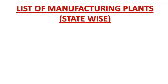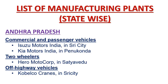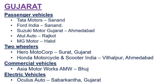Now let us see the list of automobile manufacturing plants in India. In Andhra Pradesh, the commercial and passenger vehicle sections include Isuzu Motors India in Sri City and Kia Motors India in Penukonda. In the two-wheeler section, Hero MotoCorp is in Satyavedu, and in off-highway vehicles, Kobelco Cranes is in Sri City. In Gujarat, the passenger vehicle section has Tata Motors and Ford India in Sanand, Suzuki Motor Gujarat in Ahmedabad, and Atul Auto in Rajkot, and MG Motors in Halol. The two-wheeler section has Hero MotoCorp at Surat, and Honda Motorcycle and Scooters India at Vithalapur, Ahmedabad. Commercial vehicles include AMW (Asia Motor Works), and the electric vehicle section has a Class Auto at Sabarkantha, Gujarat.